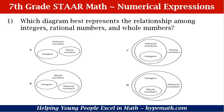Let's look at our answer choices. For A, we see there's a large circle labeled rational numbers, and then there are two smaller circles — one says integers and the other says whole numbers. Let's take a look at B. There's again a large circle labeled whole numbers, and then there are two smaller circles: one labeled integers, the other rational numbers. For C, we have three circles that are interconnected. The largest is labeled whole numbers, the circle within that is rational numbers, and the last circle is labeled integers.